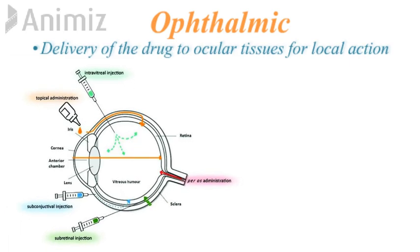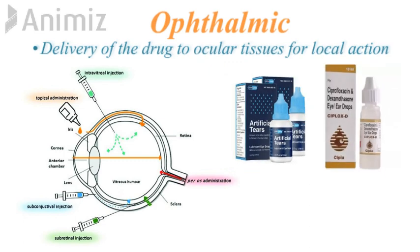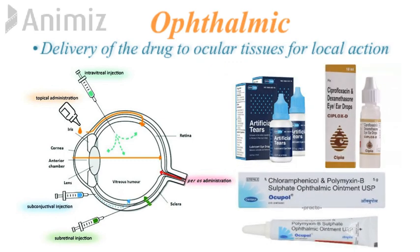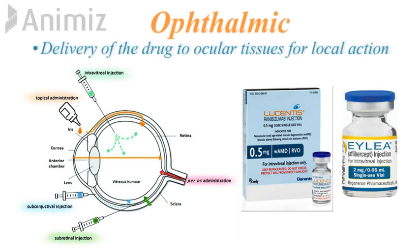Next is ophthalmic route of administration, in which the drug is delivered to ocular tissues — that means in the eyes — for local infections. Topical administration includes eye creams, eye drops, eye ointments, and eye gels. Then there are intravitreal injections which directly inject the drug into the vitreous humor of the eye. There is subconjunctival injection which injects the drug into the subconjunctival space, and subretinal injection which directly delivers the drug to the retinal surface for treatment of diseases like AMD and diabetic retinopathy.